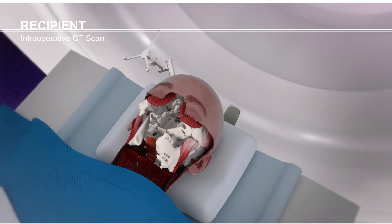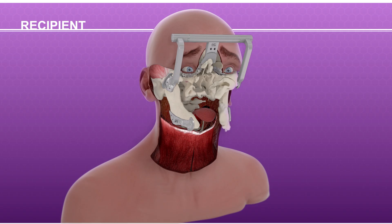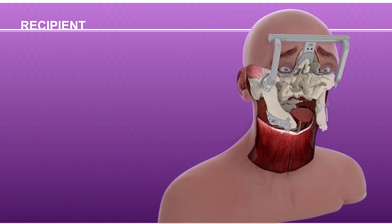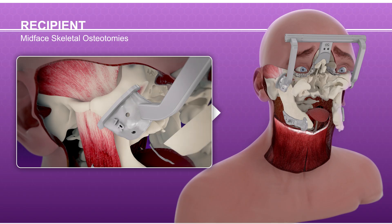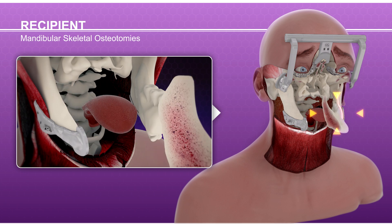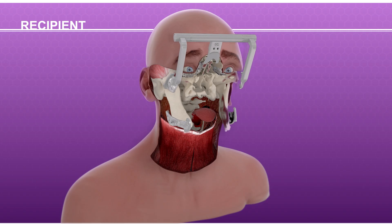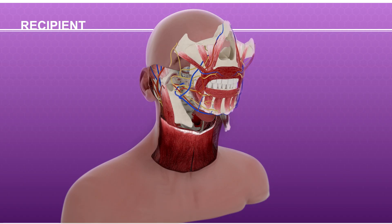The orbital floors were reconstructed bilaterally using prefabricated titanium mesh. Recipient craniofacial scanning and registration were performed using intraoperative surgical navigation to allow accurate facial allograft inset. Similar to the donor procedure, prefabricated 3D printed cutting guides were fixed into position, allowing completion of the right zygomatic, nasal frontal, left zygomatic, and bilateral mandibular osteotomies. The resultant recipient facial defect was complementary to the procured donor facial allograft.